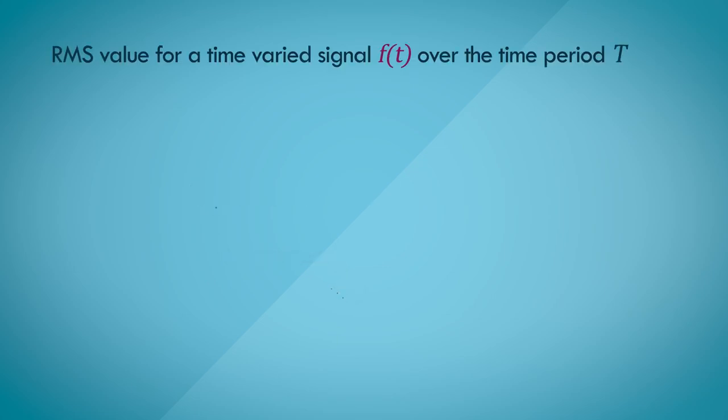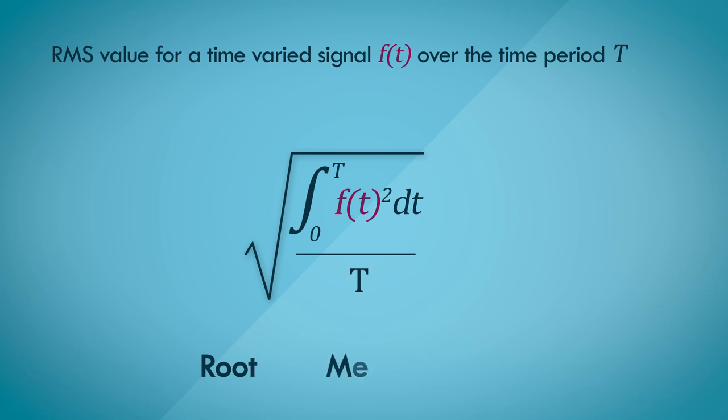So, let's look at the formula for calculating the RMS value. Here it is. It looks a bit complicated, but it really isn't. Just think about the abbreviation when in doubt. Root mean square. This formula has all of that in that particular order.